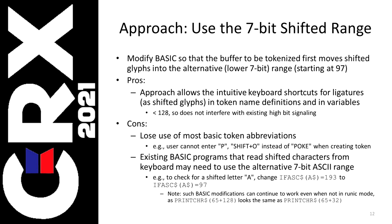Existing BASIC programs — that's another con — that read shifted characters from keyboard input would need to use that alternative 7-bit range. So for instance, if your BASIC said 'IF ASC of a string equals 193,' you'd need to change that to 97 instead. So there are a couple of incompatibilities, but I think I could live with all those.